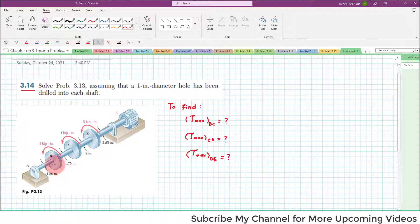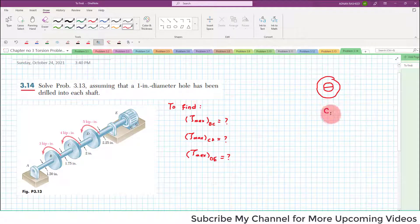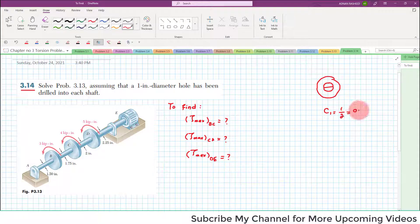But here it is given that 1 inch diameter hole has been drilled into each shaft. So now the shaft is no more solid but it will be a circular hollow circular shaft with inner diameter of 1 inch. So C1 will be equal to 1 inch divided by 2, it will be equal to 0.5 inch. And the outer diameter will depend on the diameter of the shaft.